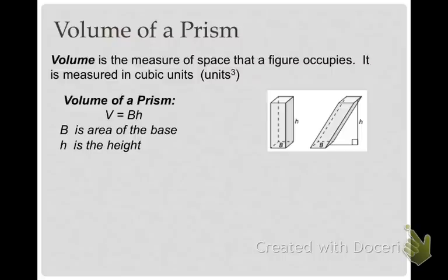Volume is just the measure of the space that the figure occupies. It's always measured in cubic units, whereas area is in square units. So the volume of a prism is V equals capital B times h, where the capital B is the area of the base, and h is the height of the prism.